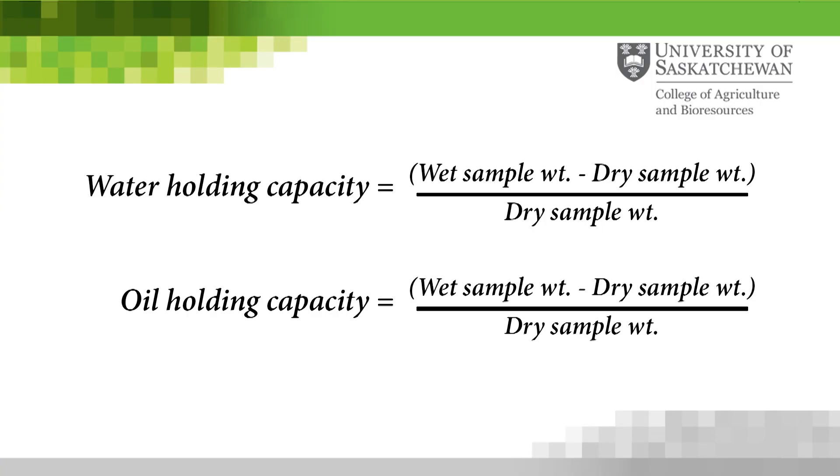Water holding capacity is calculated as the wet sample weight minus the dry sample weight divided by the dry sample weight.